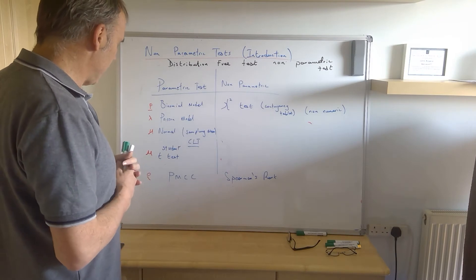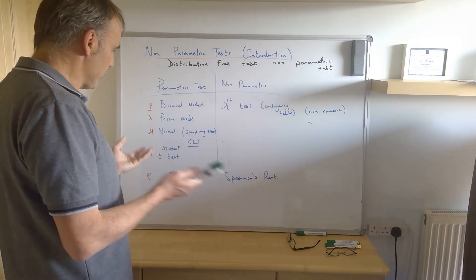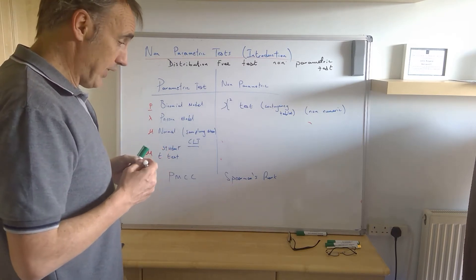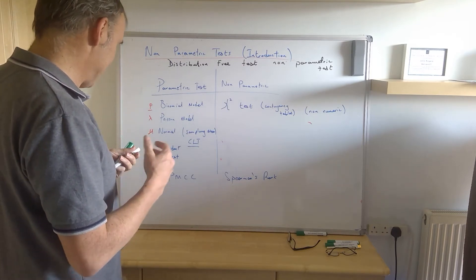So we're going to start off with that, and these refer to bivariate data. Spearman's rank makes no assumptions about the bivariate data, whereas the product moment correlation coefficient assumes that the data is bivariately normally distributed. So that's a big assumption. We've got the contrast between those two. So we'll start off with that. And then we're going to do a few more tests which are non-parametric.